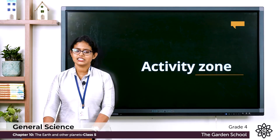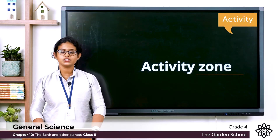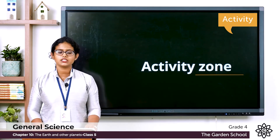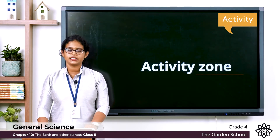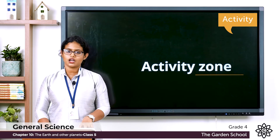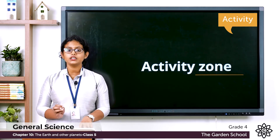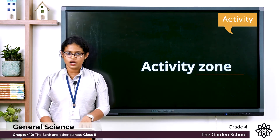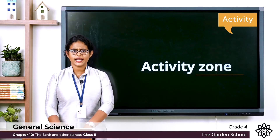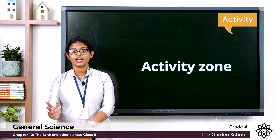The next one is the activity. You need to locate a planet in the night sky. Planets have a steady light and they do not twinkle like stars — that is how you can differentiate a planet from a star.